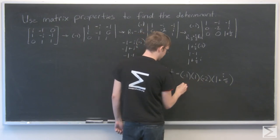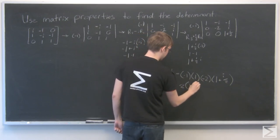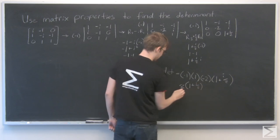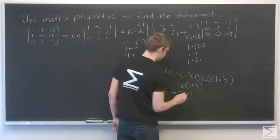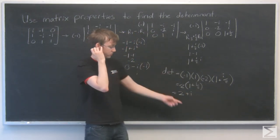Minus 1 times minus 2 becomes just 2 times 1 plus i over 2, which is equal to 1 plus i over 2. So our determinant is 1 plus i over 2.